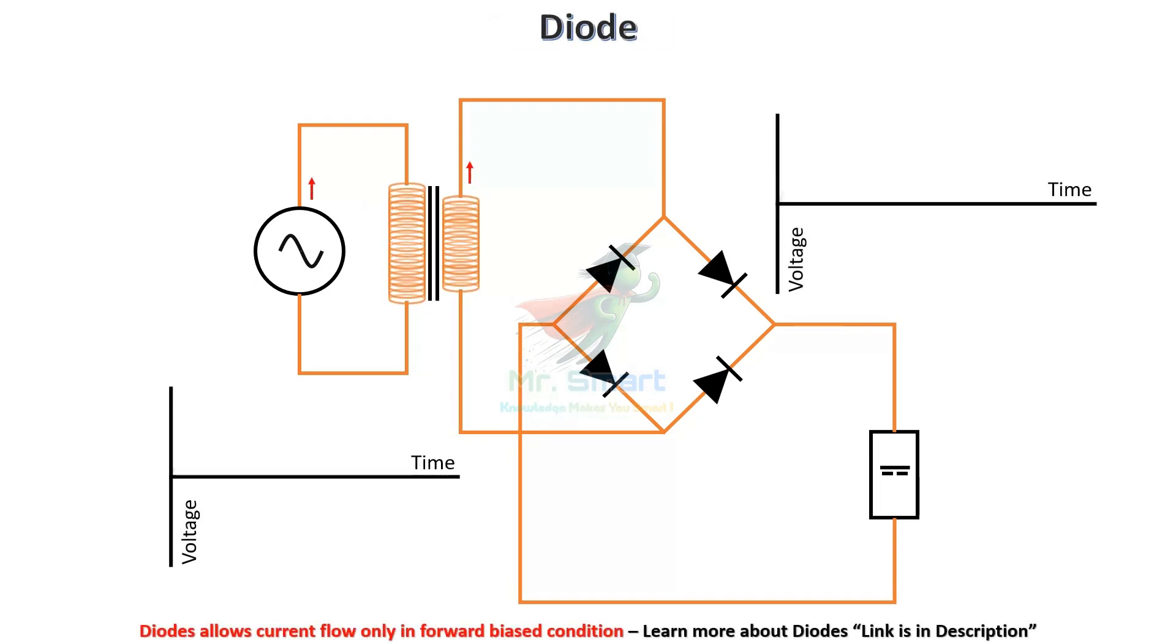The diodes are the semiconductor devices which act as the core of any rectifier. They allow current to flow in one direction while blocking the reverse flow, creating the DC output.